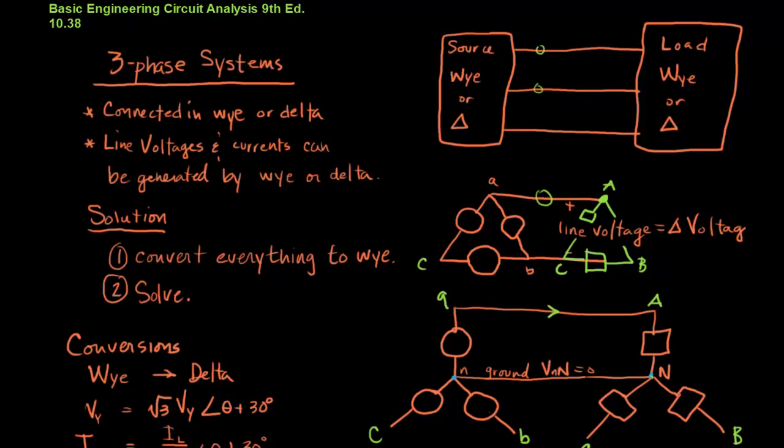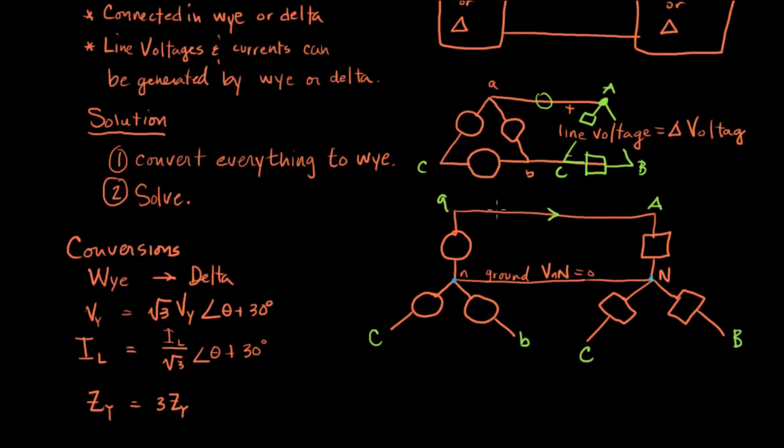But when we look at a Y-to-Y network, the central node of each Y is connected to the ground, such that the voltage across all of the central nodes in every Y network that's connected in parallel is zero. So what that allows us to do is take a single phase of a Y-to-Y network and solve it independently of the rest of the elements in the network. And then we can relate that single phase to all of the other phases because all of them will be off by 120 degrees.